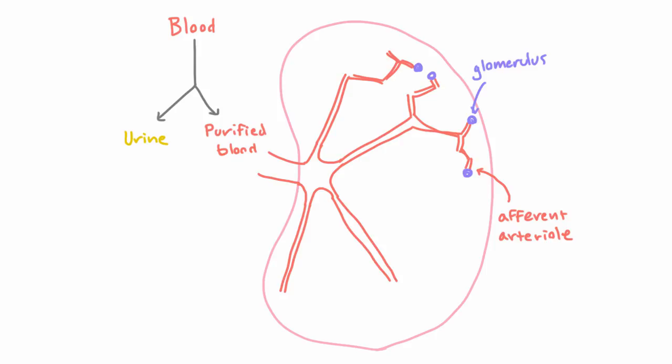But for now, let's just understand that each and every single afferent arteriole - and there are a lot by the way, because these vessels have branched so many times - we end up with a lot of afferent arterioles, actually up to one million per kidney. So each and every single afferent arteriole goes towards a glomerulus. And since there's a million afferent arterioles, that means there's also a million glomeruli.